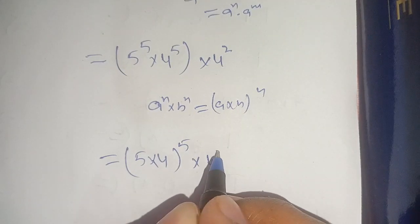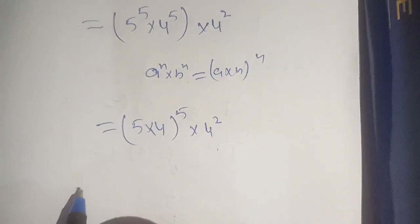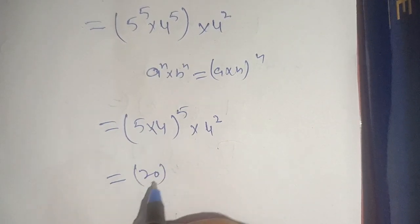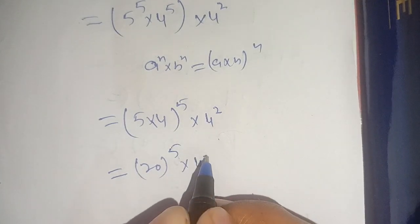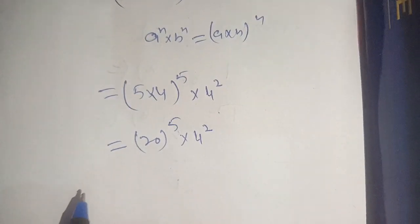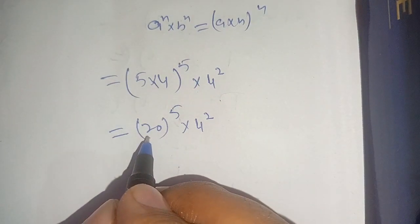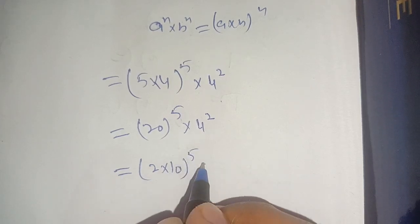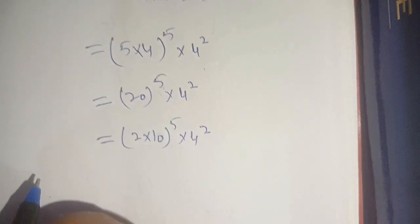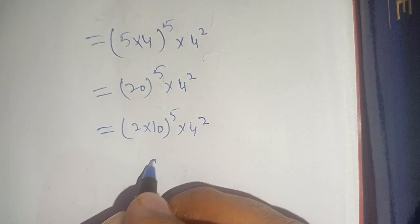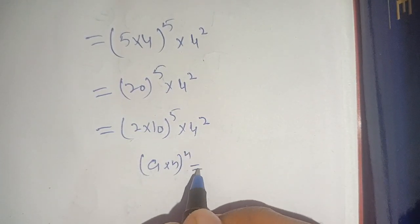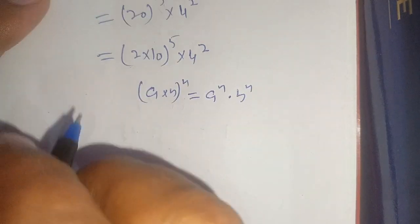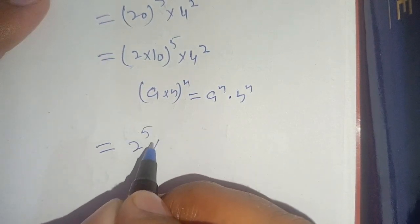Using this identity, we get 5 times 4 — which equals 20 — raised to power 5, times 4 raised to power 2. We can break down 20 as 2 times 10, giving us (2 times 10) raised to power 5 times 4 raised to power 2. We apply the identity: (a times b) raised to power n equals a raised to power n times b raised to power n.